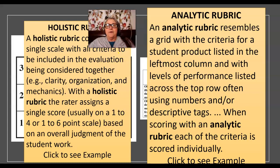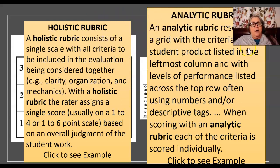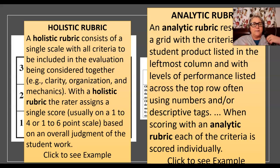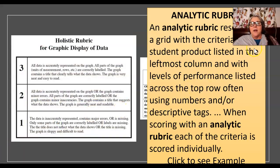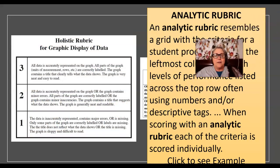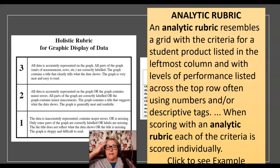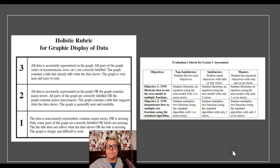We have a couple of different kinds of rubrics you can also use. In a holistic rubric, you have a single scale where all the criteria are included together, and the rater assigns a single score — usually one to four or one to six — based on an overall judgment of the student's work. Then you have an analytic rubric, which resembles a grid with the criteria for the student product listed and levels of performance listed. Generally there are descriptions for each level of performance.